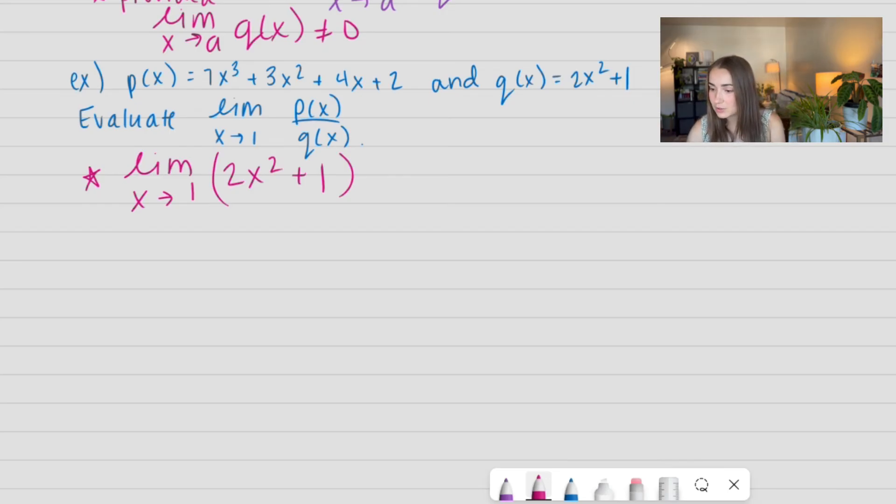So, I'm going to use my rule. I know I'm just going to plug in 1, so I get 2 times 1 squared plus 1, which is equal to 2 plus 1, which is 3, which is not equal to 0. So, we're happy and we can apply this rule.